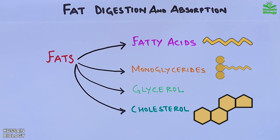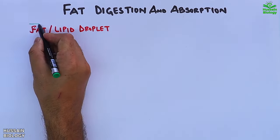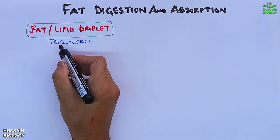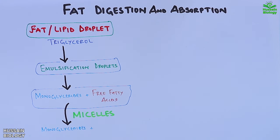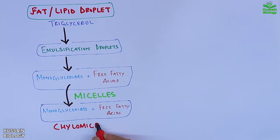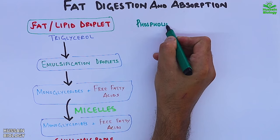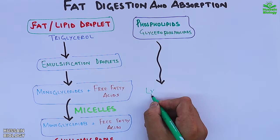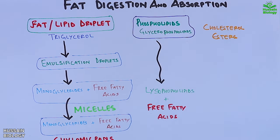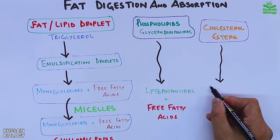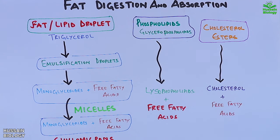First of all we see the components we have in the diet. We have fat or lipid droplets, which have a core structure of triglycerol. These are converted into emulsification droplets, then to monoglycerides and fatty acids. We also have phospholipids in glycerophospholipid form that are converted into lysophospholipids and free fatty acids, and cholesterol esters that are digested into cholesterol and free fatty acids.